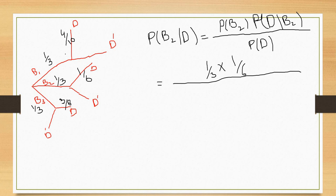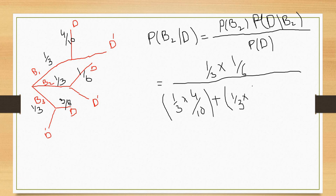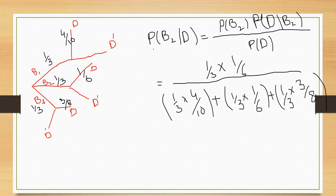Divided by: (1/3)·(4/10) + (1/3)·(1/6) + (1/3)·(3/8) — तीनों branches की probabilities add हो जाएंगी। इसका sum करेंगे, multiply और divide करेंगे तो हमारे पास required probability आजाएगी — that is probability of selecting a bulb from box 2 when it is a dead bulb।